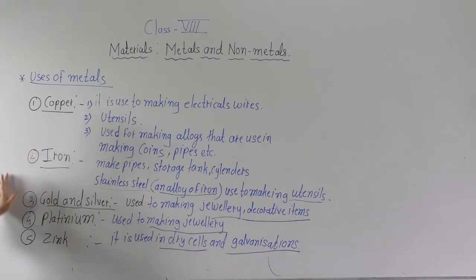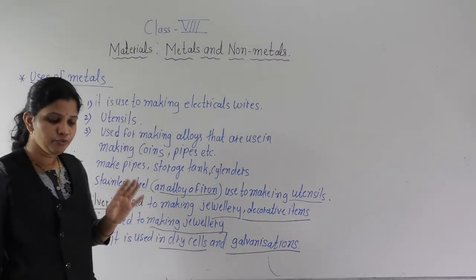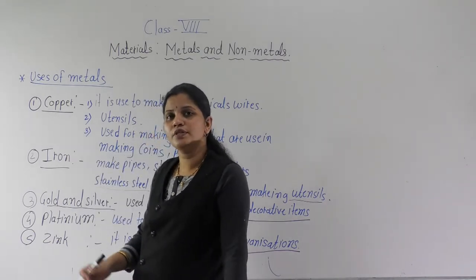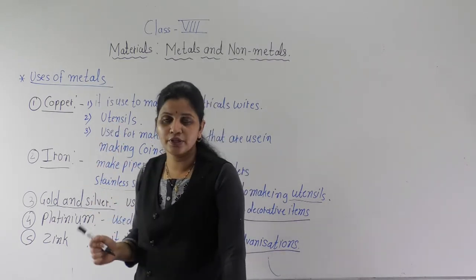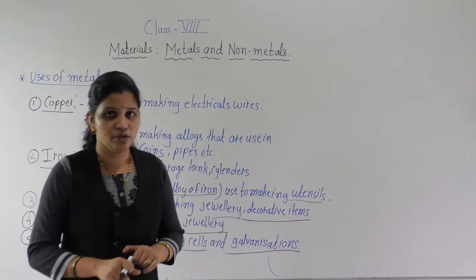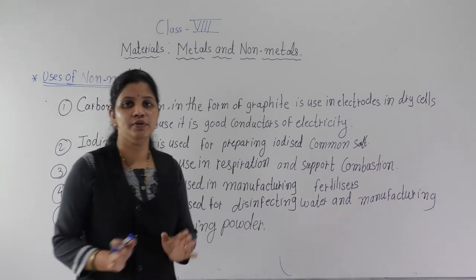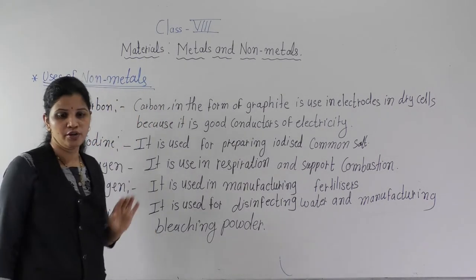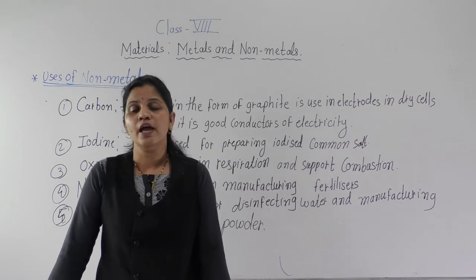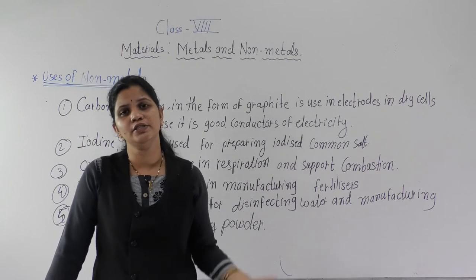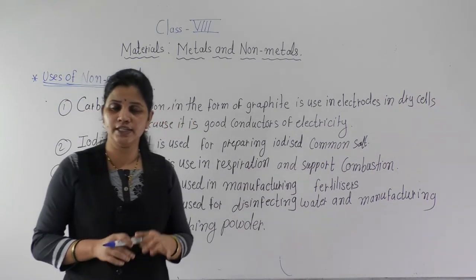So here are some metals and their uses. First, copper — remember where it is used and write two to three uses of each metal. Common metals which we are using regularly. I have given five metals and examples. Write all these examples down in your notebook. Now the next point we will learn is the uses of non-metals. We will see two or three non-metals and what are the uses of each.